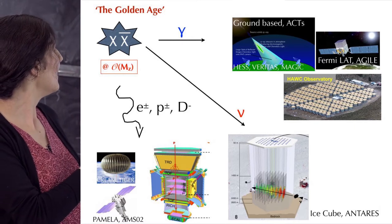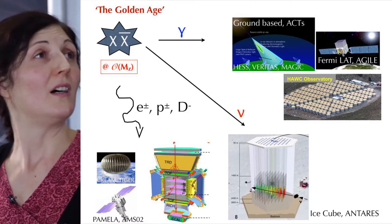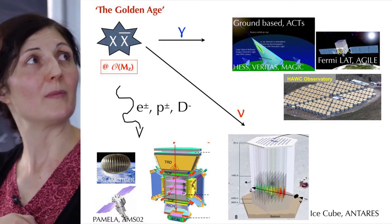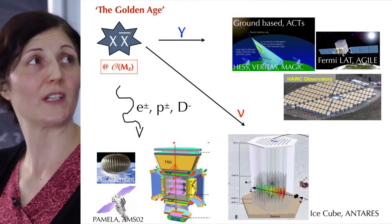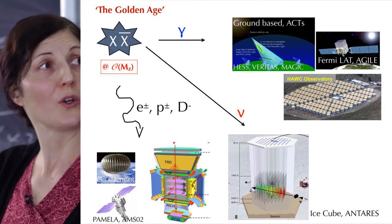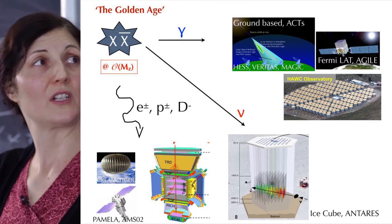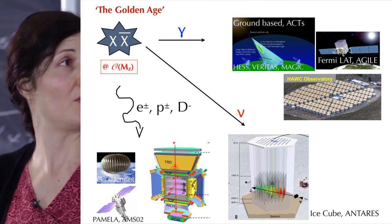If one thinks that two dark matter particles annihilate to photons, we now have several experiments such as ground-based Cherenkov telescopes like HESS, MAGIC, and so on, satellites such as Fermi-LAT or Agile, or water Cherenkov such as the Hawc Observatory, to look for those extra gamma rays and to try to find dark matter.